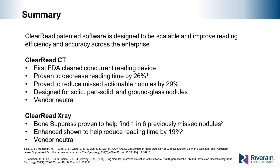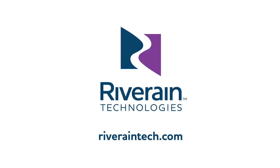In summary, the patented ClearRead software applications are designed to improve reading efficiency and accuracy pertaining to the detection of lung disease. As the first FDA-cleared concurrent reading device, ClearRead CT is proven through a large-scale multi-reader multi-case study to decrease reading time and increase nodule detection, with a vendor-neutral solution compatible with all PACS and modality manufacturers and approved for all nodule types. ClearRead X-ray, an FDA-approved vendor-neutral suite including bone suppression, is proven to help find one in six previously missed nodules, and with the Enhance application is shown to reduce reading time by 19%. Thank you for your time and interest in River Rain Technologies' ClearRead suite of applications.